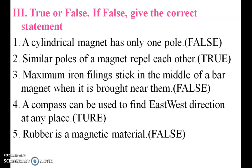True or false: A cylindrical magnet has only one pole — that is false. Similar poles of a magnet repel each other — that is true. Maximum iron filings stick to the middle of a bar magnet when it is brought near them — that is false.